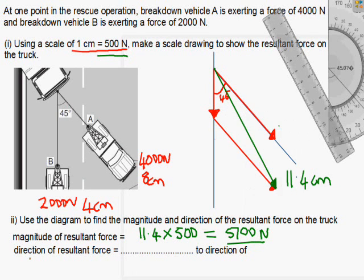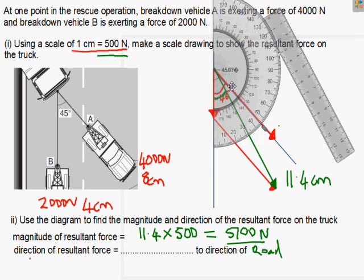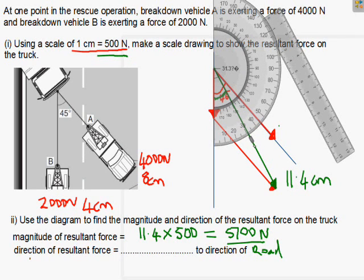So now the direction of the resultant force. And it's important here - it says to the direction of the road, which somehow I've managed to lose there. So to the direction of the road. So now I need to just measure this angle here. So again, just get the protractor over. And that's 31 or 30.7. I'll just - yeah, I'll just round that up. 31 degrees.